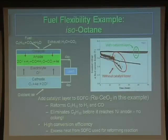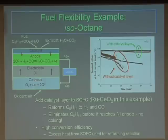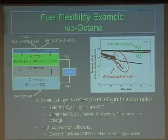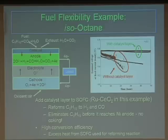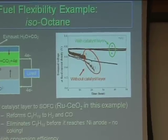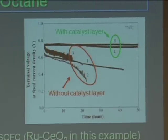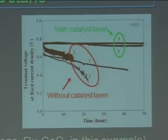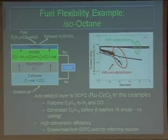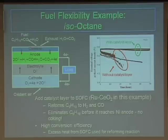This is an example of an SOC running on isooctane, done mainly through the addition of a catalyst layer placed on top of the anode. Commonly, nickel-YSZ anodes experience coking — where carbon deposits onto the nickel — which is detrimental for anode performance. Three examples shown here demonstrate a common nickel-YSZ anode degrading rapidly while running on isooctane. But if we add this catalyst layer — in this case a ruthenium-ceria composite — you get very stable operation and high conversion efficiency. The excess heat from this reaction is used for internal reforming, reducing the cost of not needing an external reformer to reform isooctane into hydrogen and carbon monoxide.